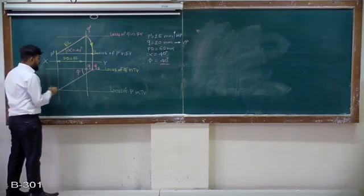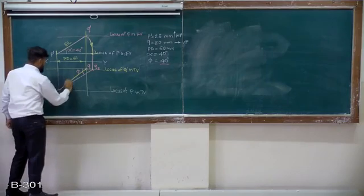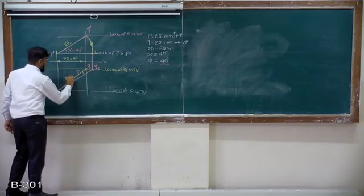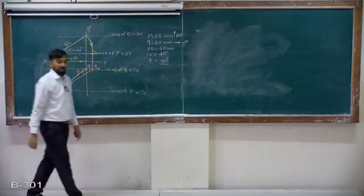Join this point P with Q. This is your plan length and corresponding angles are beta. That's the whole problem.